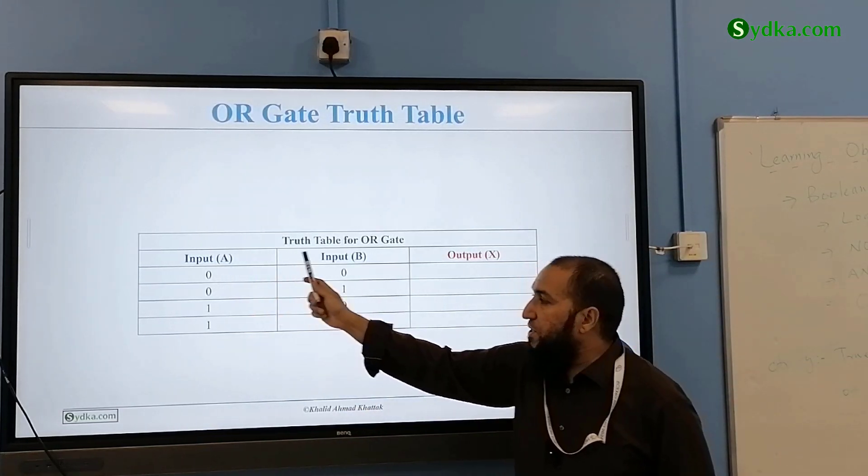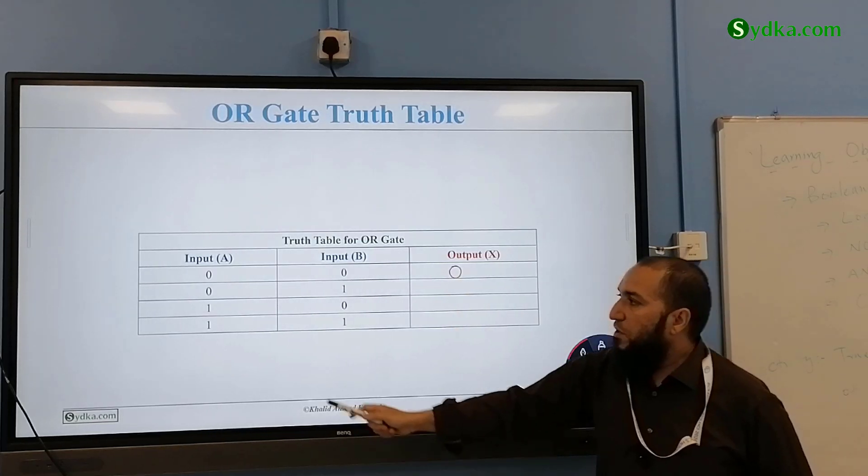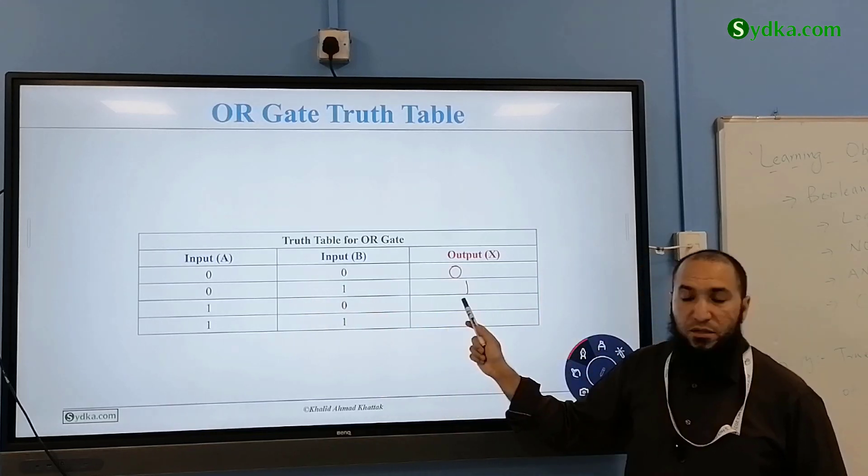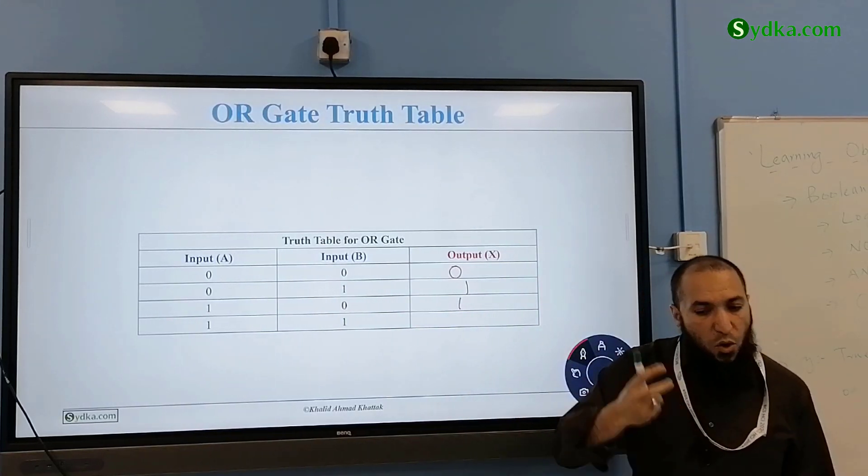Here what we have, 0, 0 is going to give us 0. 0, 1 is going to give us 1. 1, 0. Because 1, this or this.